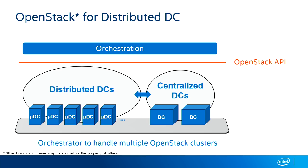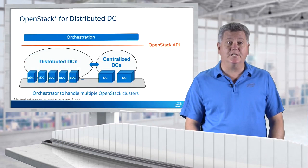There are other models that can exist that may be simpler than this. For example, a distributed data center may have a simpler orchestration model that allows for microservices inside that data center to be centralized inside that OpenStack type of environment. You may see simpler architectures in some of the cloud environments.